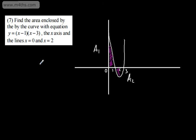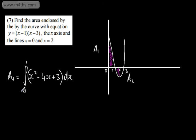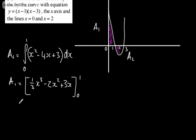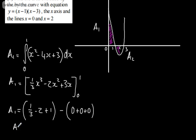A1 will be equal to the integral from 0 to 1. Expanding (x-1)(x-3) gives x² - 4x + 3, so we integrate x² - 4x + 3 with respect to x, giving 1/3 x³ - 2x² + 3x, evaluated from 0 to 1. A1 = 1/3 - 2 + 3 - 0, which gives 4/3.